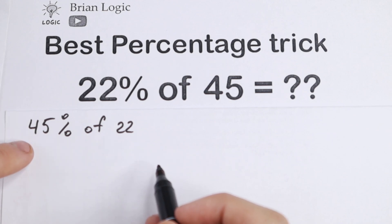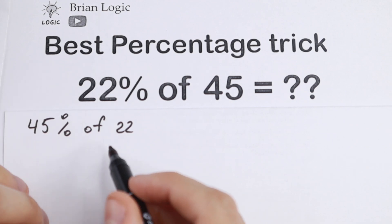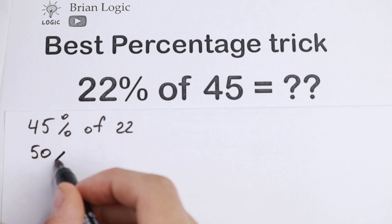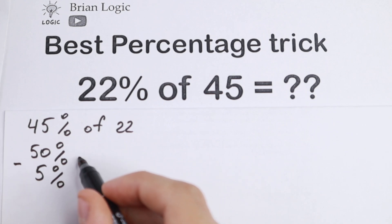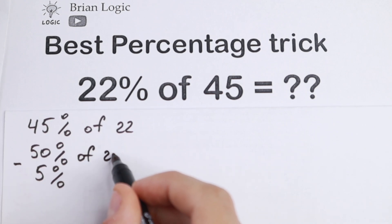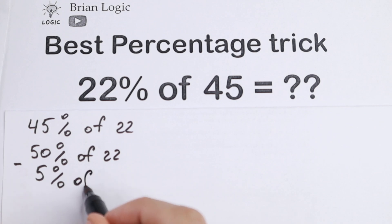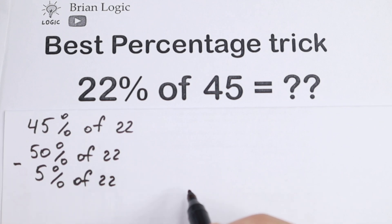But take a look, 45% is really good, because 45% is 50% minus 5%. So you need to find 50% of these 22 and minus 5% of these 22. Let's find these values.